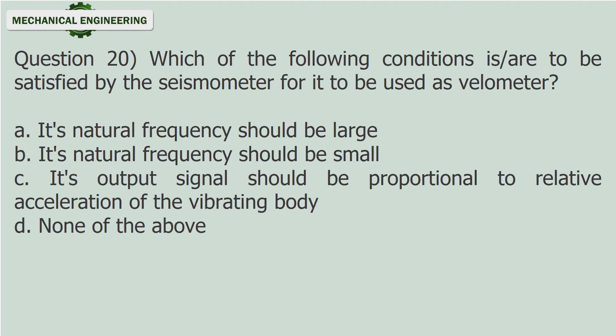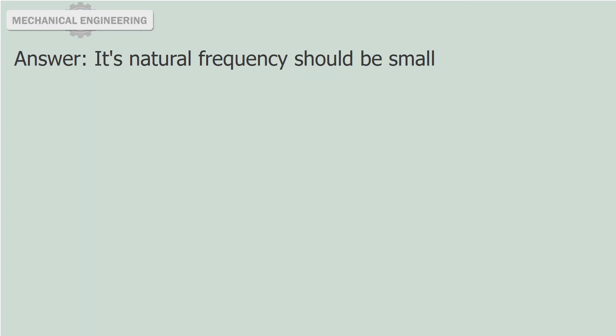Question 20: Which of the following conditions are to be satisfied by the seismometer for it to be used as a velometer? a. Its natural frequency should be large. b. Its natural frequency should be small. c. Its output signal should be proportional to relative acceleration of the vibrating body. d. None of the above. Answer: Its natural frequency should be small.